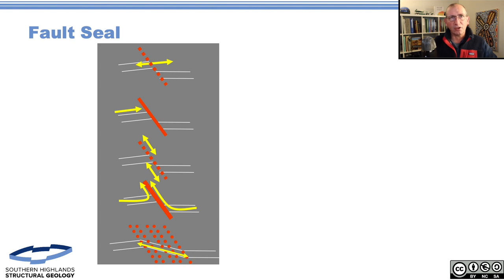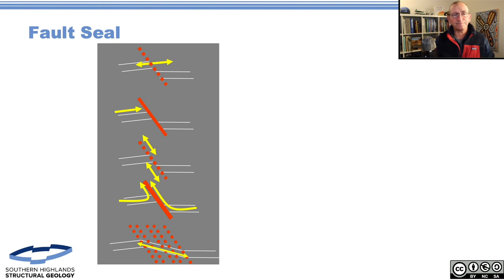In our consulting work, faults are often inferred because of flow responses when there's poor data or unfolding, and in many cases these are related to stratigraphic changes. We've got some really good case studies for that.